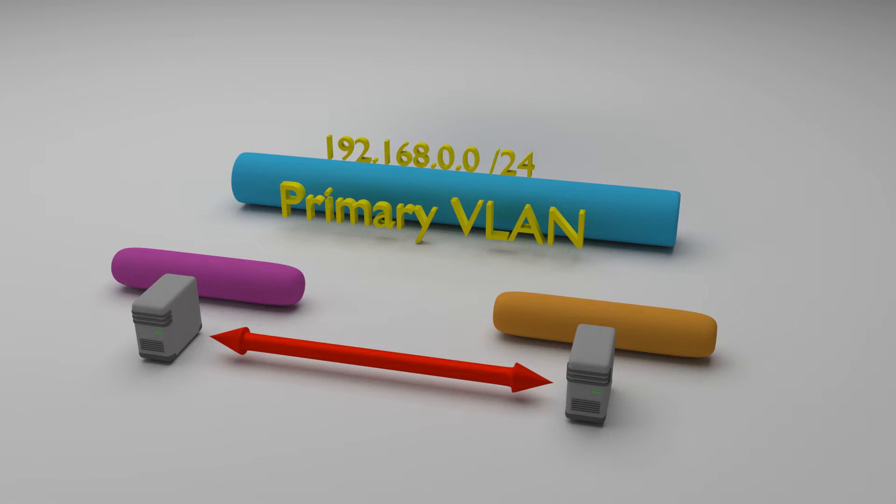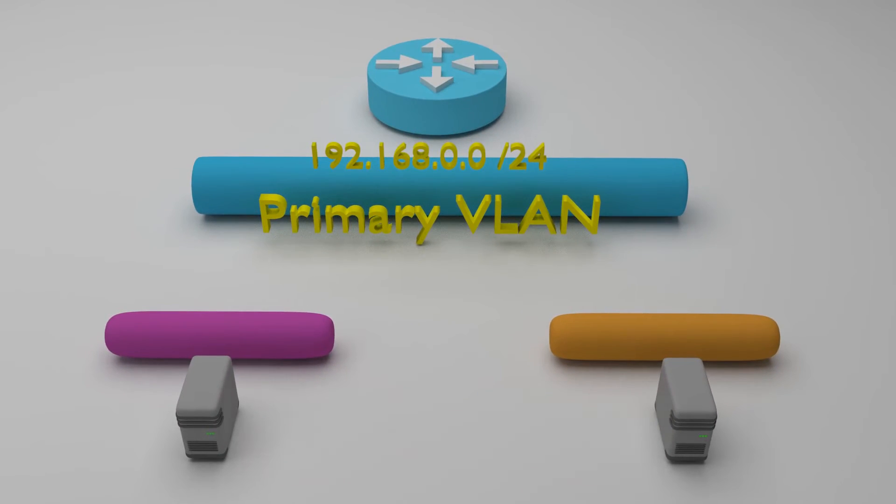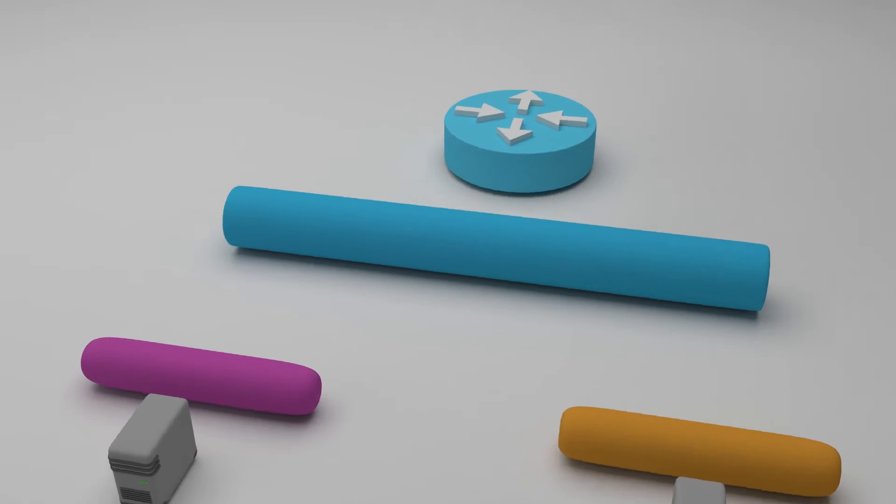And to round it out, we can add a router to the primary VLAN. If we configure this correctly, we can allow devices from any secondary VLAN to communicate with it. And that's requirement number three covered. Let's see how it's done, starting with the router in the primary VLAN.